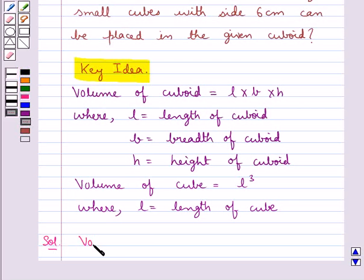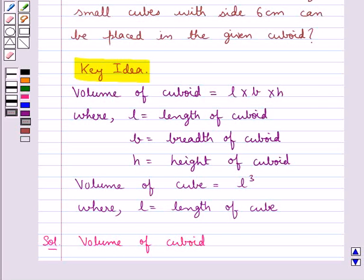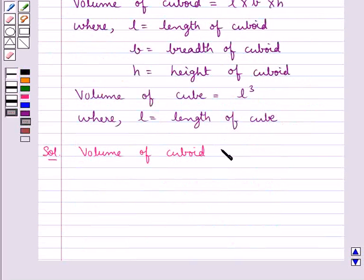Volume of cuboid given to us is 60 cm × 54 cm × 30 cm, which is equal to 97,200 cm³.